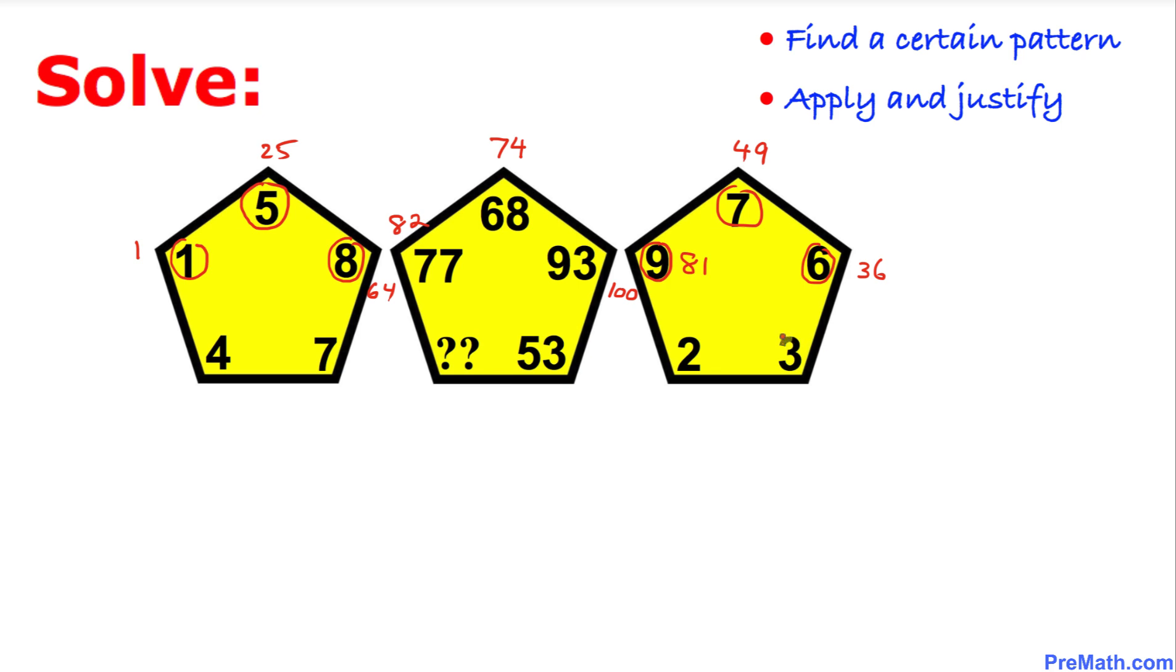Likewise when we square these numbers, 7 squared is 49 and 3 squared is 9. If we add that up that is going to give us 58.